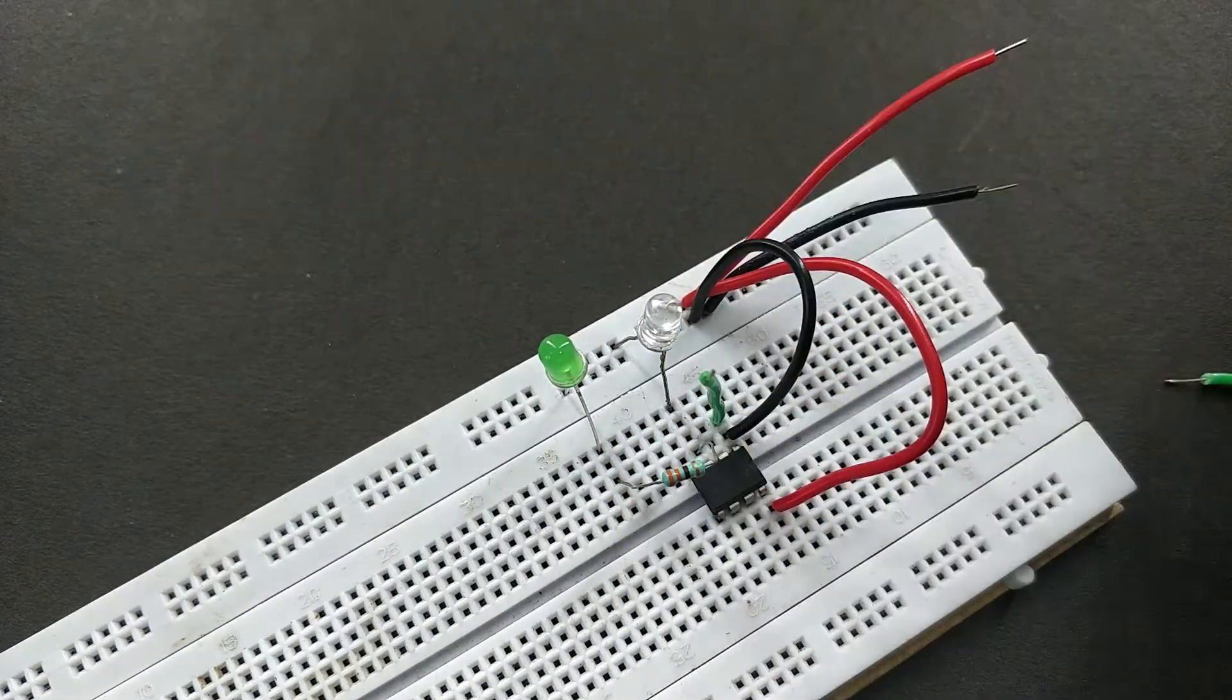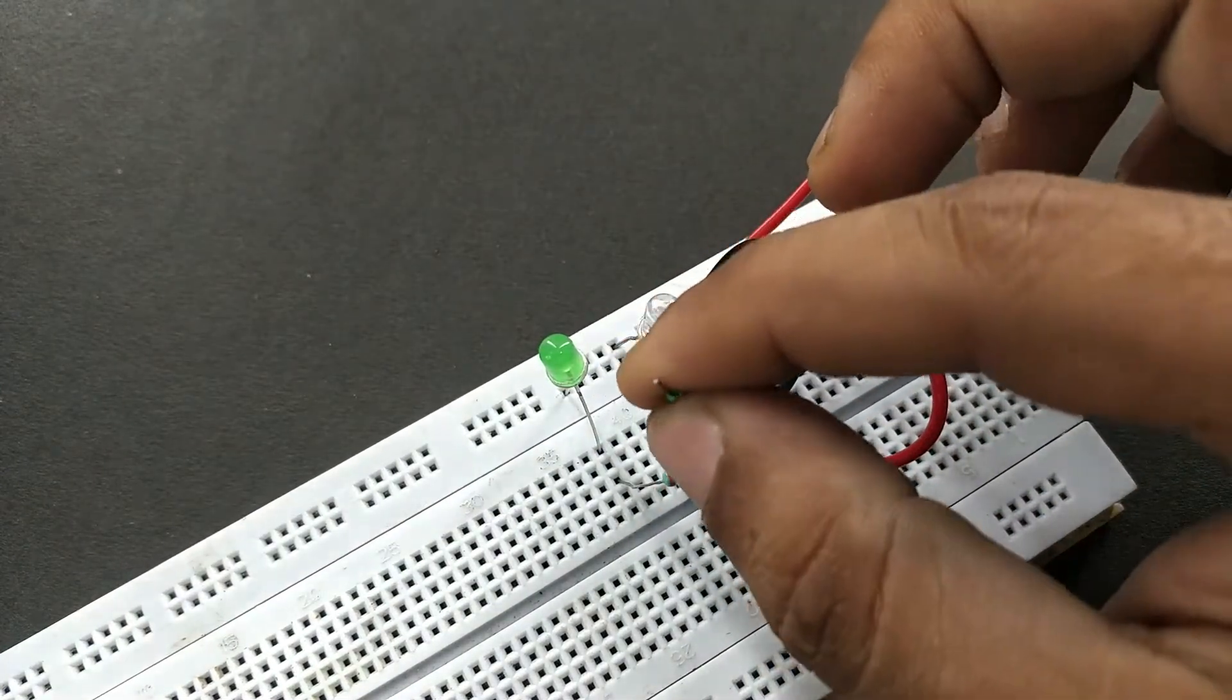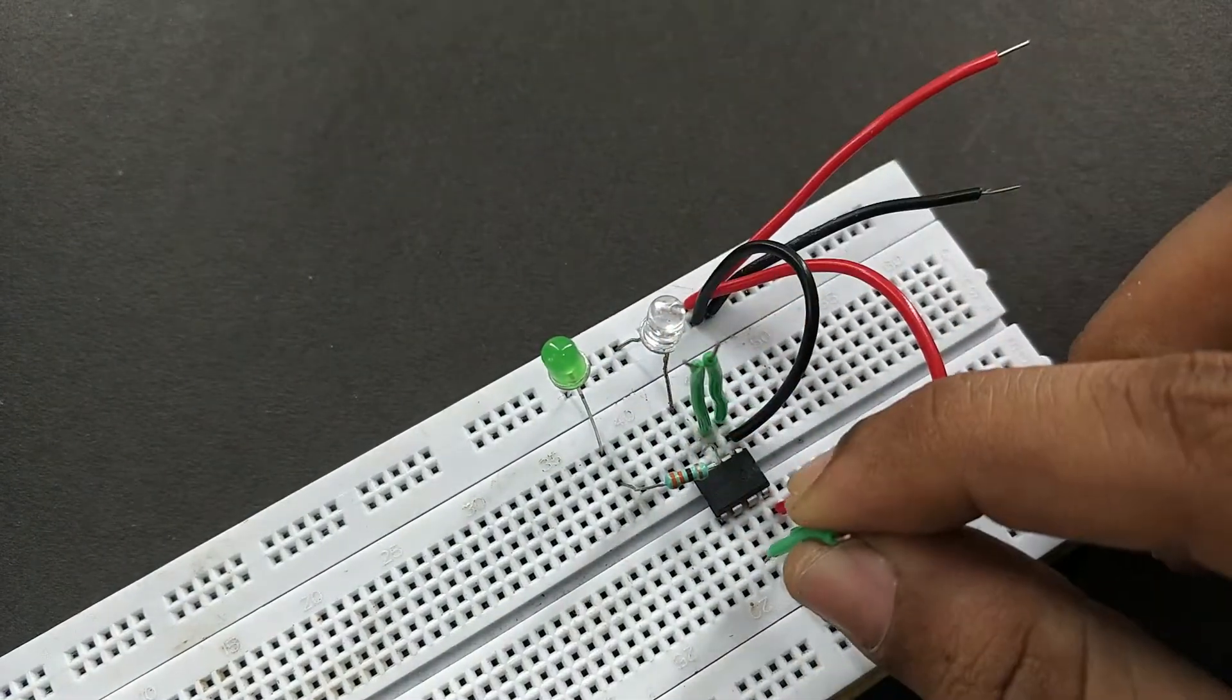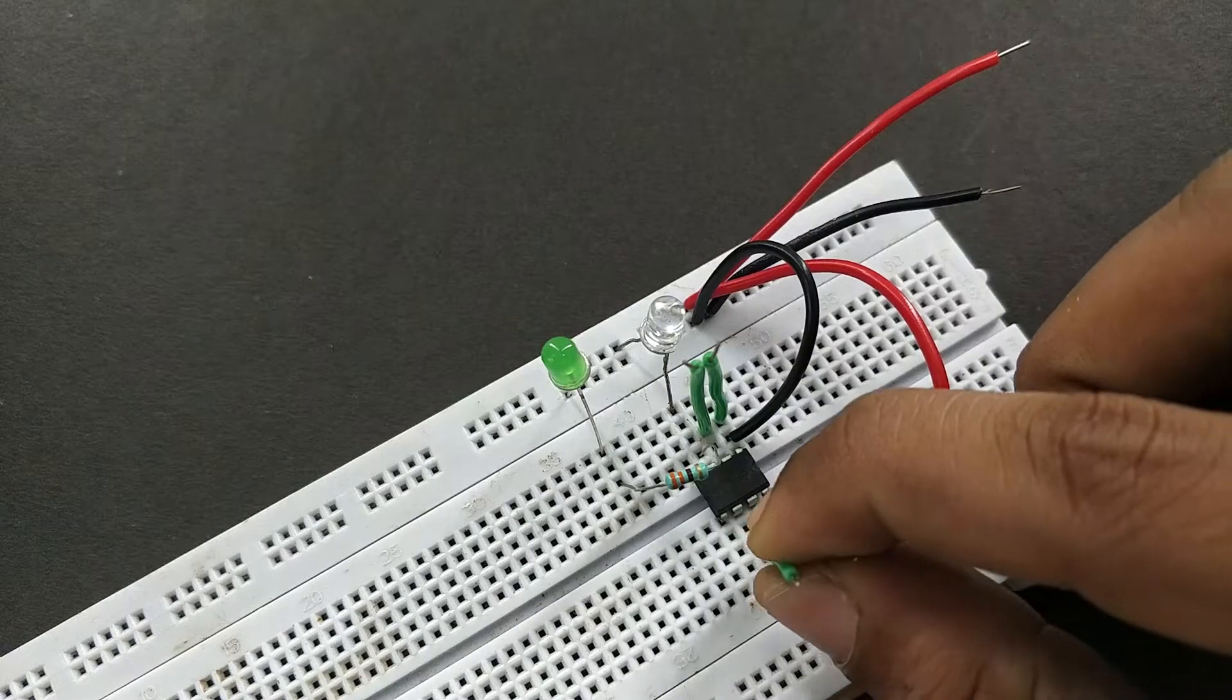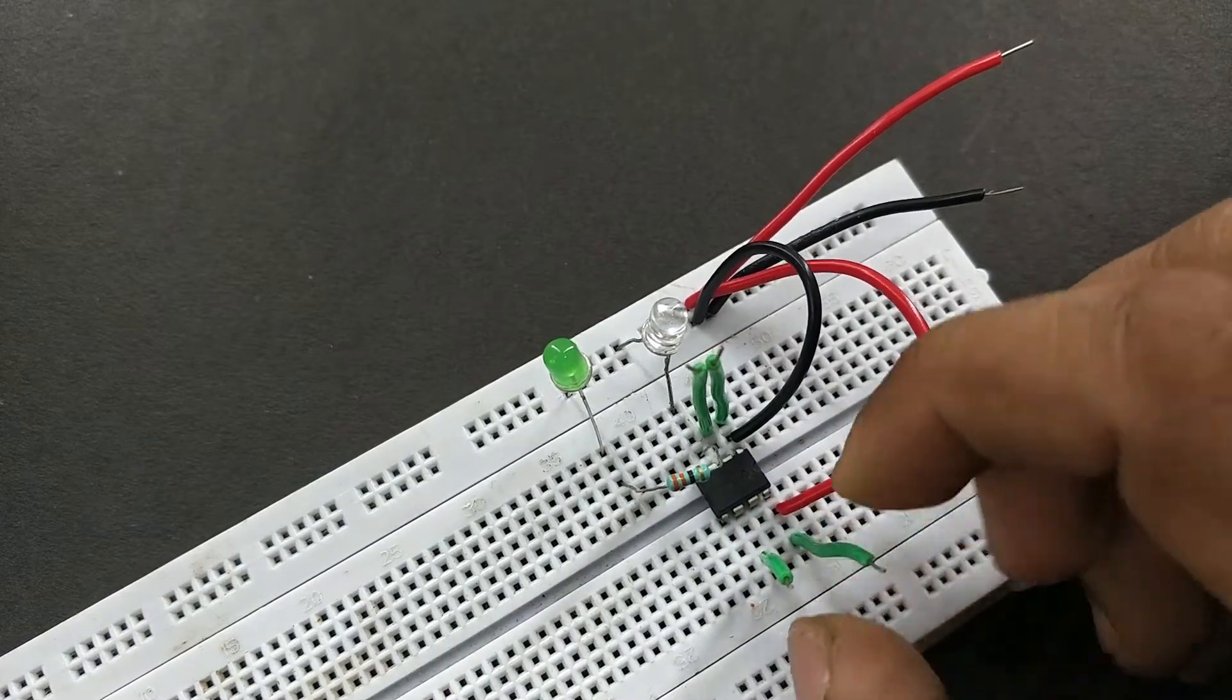Now connect two wires to pin number 1 and 2 of the IC and this will act as our first touch switch. And then connect two wires to pin number 6 and 8 of the IC and this will act as our second touch switch.